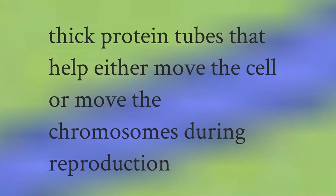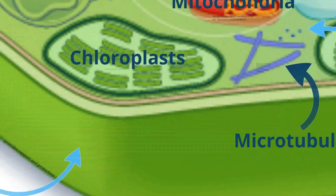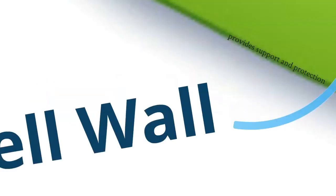Microtubules, again, are thick protein tubes that either help move the cell or move chromosomes during reproduction of the cell through either mitosis or meiosis.